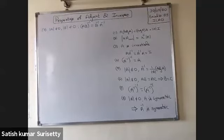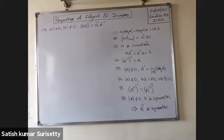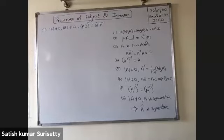Inverse of transpose of A equals transpose of inverse of A — that is, A transpose whole inverse equals A inverse whole transpose, provided A is non-singular. If A is non-singular and A is symmetric, then A inverse is also symmetric. If A and B are non-singular square matrices of the same order, then AB inverse exists and AB whole inverse equals B inverse A inverse.